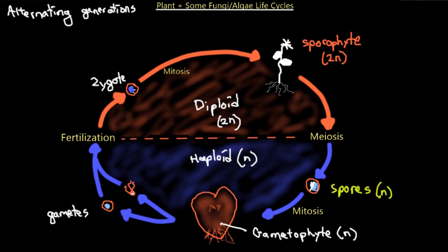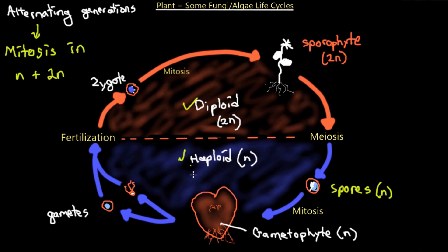The very important difference between plant and some fungi and algae life cycles compared to animal life cycles is that in alternating generations, we have mitosis occurring in both the diploid and the haploid phases. Mitosis happens in the haploid stage too. However, in animal life cycles, we don't have mitosis in the haploid stage — we simply undergo meiosis, produce our gametes, and they fertilize. There is no growth occurring in the gametes. That's the key distinction.